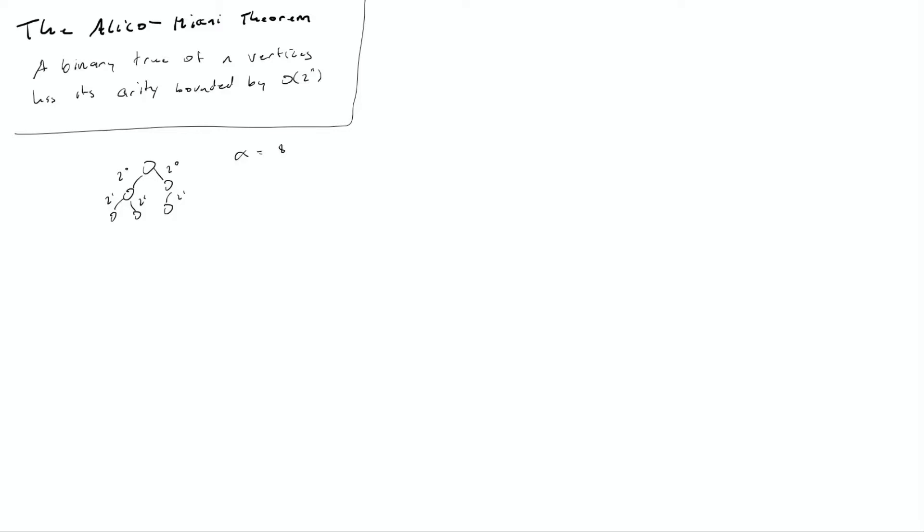You just write out the powers of two, as we do, and then you just multiply them all together. So this is two times two times two times one times one, which is eight. So the arity, which is represented with the Greek letter alpha, is eight here. And the actual bound is two to the sixth power, because there are six vertices here, and two to the sixth power is 64. And so clearly in this binary tree, the Alicomiani theorem holds, and the arity is bounded by order of two to the n. Eight is not very close to 64, but in different looking binary trees, it will actually get closer.